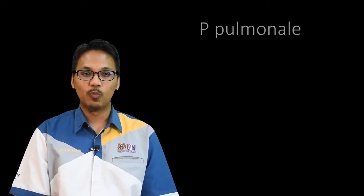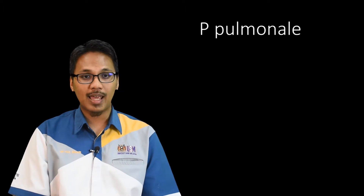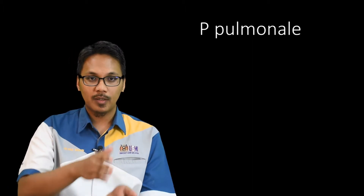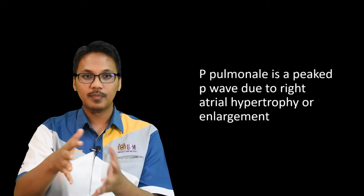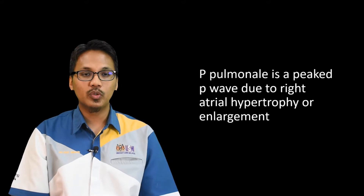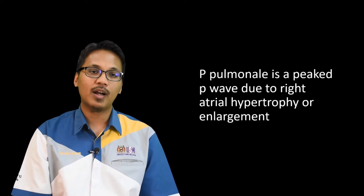Now, let us proceed with our third special condition, which is P-Pulmonale. P-Pulmonale is actually a peaked P-wave, meaning that it's a tall P-wave due to right atrial hypertrophy or right atrial enlargement.